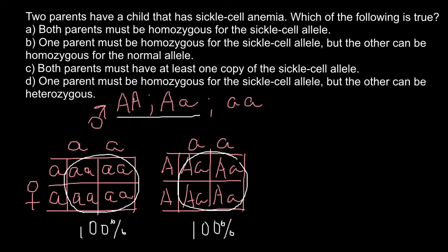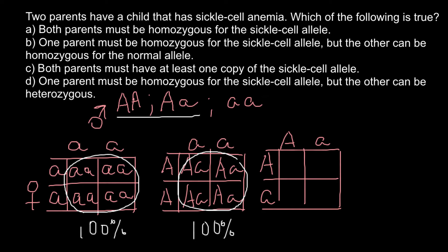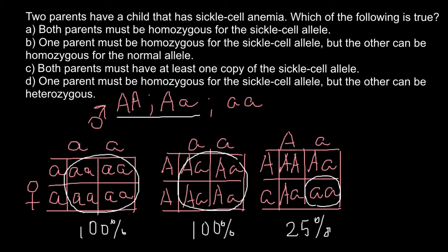Now let's check answer C: both parents must have at least one copy of the sickle cell allele, meaning both parents must have at least one recessive allele — a heterozygous genotype. Crossing two heterozygous parents gives one normal (AA), two carriers (Aa), and one homozygous recessive (aa) — so there is a 1 out of 4, or 25% chance that the progeny would express this genetic disorder.